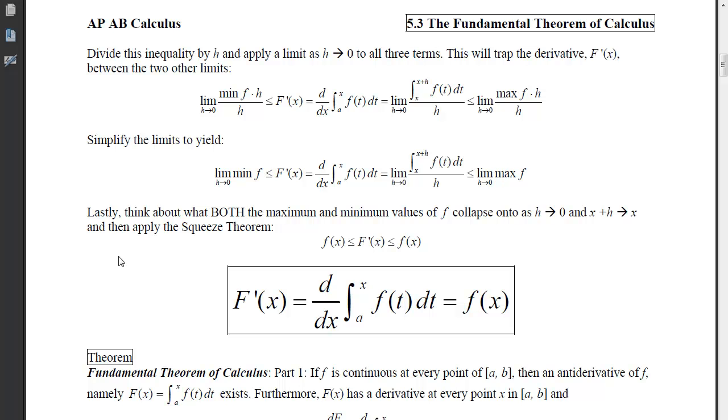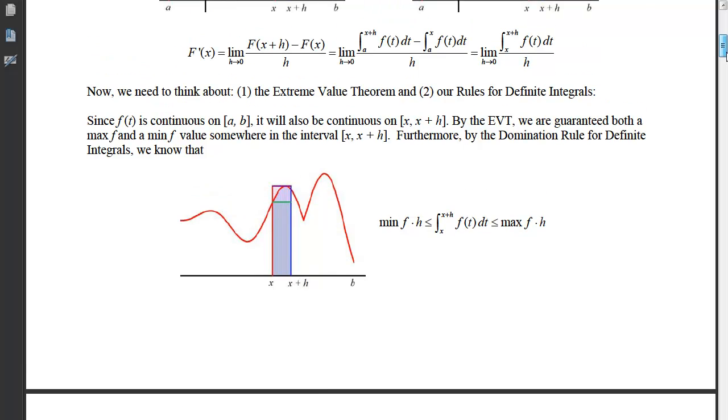Now lastly, we want to think about what both the max and minimum values of f, little f, will collapse onto as h approaches 0 and as x plus h approaches x. If you look back at the picture here, if h goes to 0 and it shrinks down here, then the max and min y values that are trapped in between are going to eventually squeeze down onto f of x.